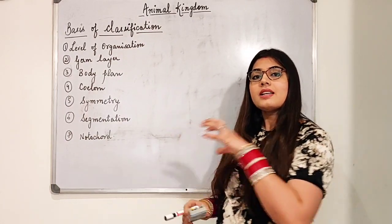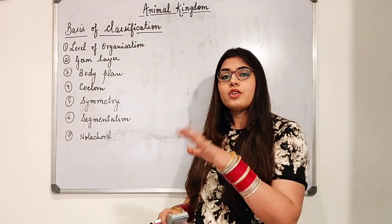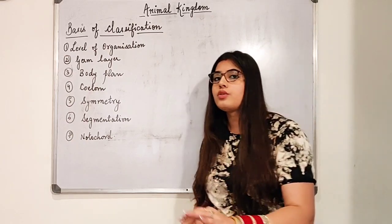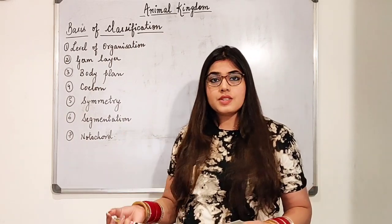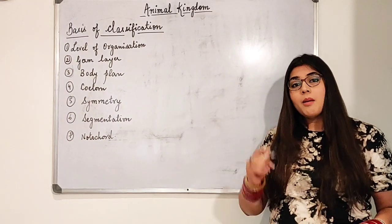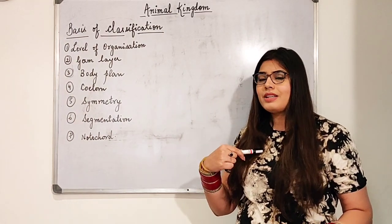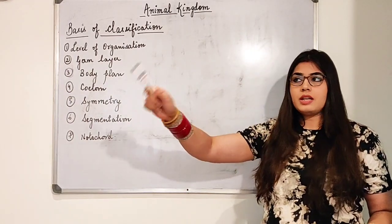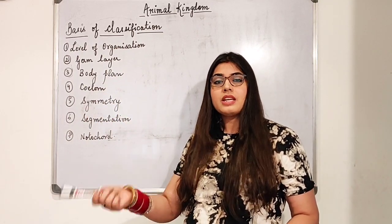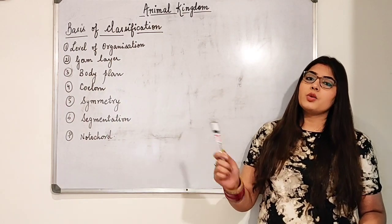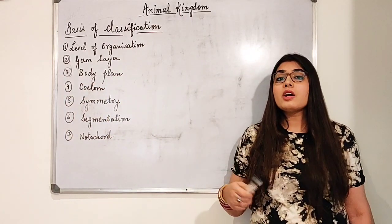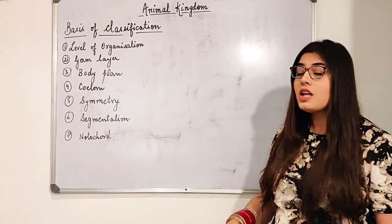Basis of classification means: on what criteria are we classifying? For example, if I am a teacher with 40 students and I've been told to assign them into four groups, my criteria can be anything — creativity, knowledge, marks, sports activities. But if I choose to classify on the basis of marks, I can make four groups: 90–100, 80–90, 70–80, and 60–70. So the criteria here is marks.